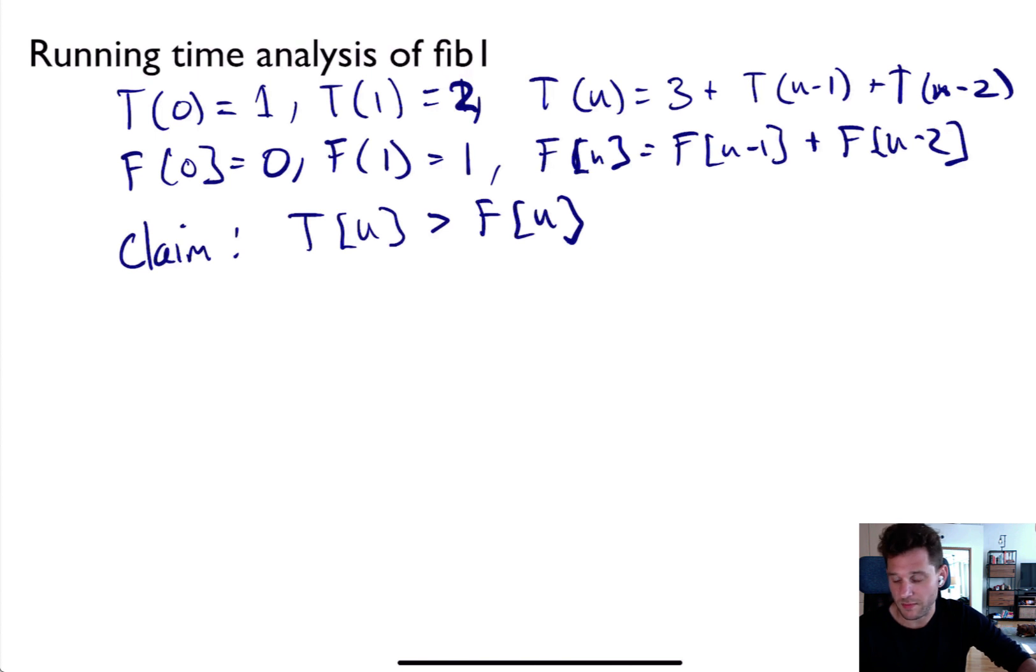I'm going to make a claim. The claim is that T(n) is always bigger than F(n), just given these two expressions. Now, why is that? Well, I guess this can be proven using induction. So I'll just write proof is an exercise. Just have to check the base case and then the recursive step. But the key thing to note is that T(n) looks very similar to this F(n) recursive expression, except that T(n) has this three here. So it definitely is getting larger.